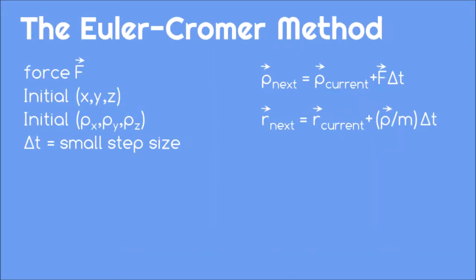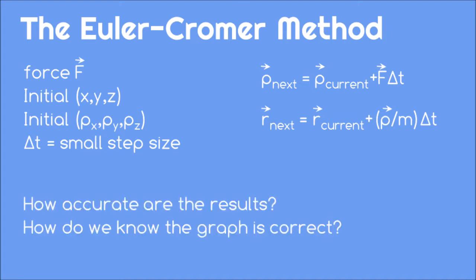We've now used the Euler-Cromer method to examine several motion problems, and you should start to feel comfortable applying this method to various scenarios. A good question to consider is, how accurate are the results that this method produces? How do we know that the resulting animation and graph are correct?